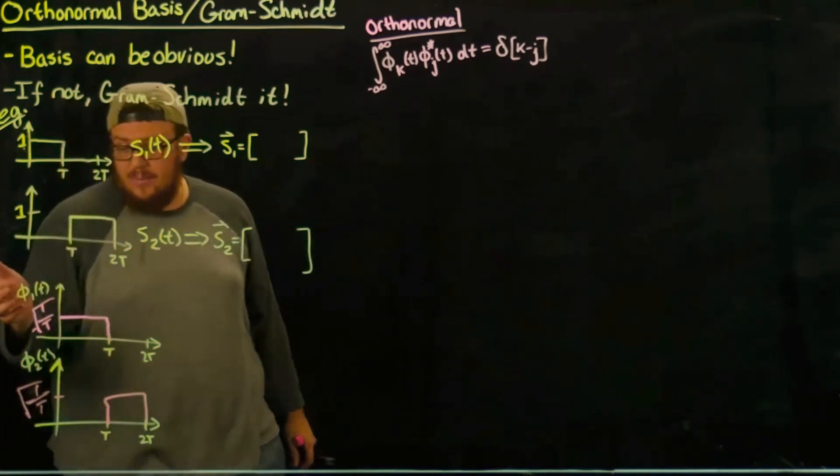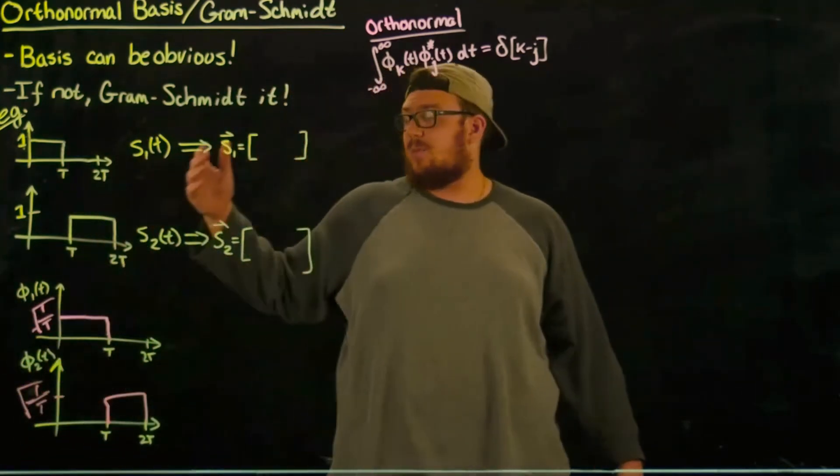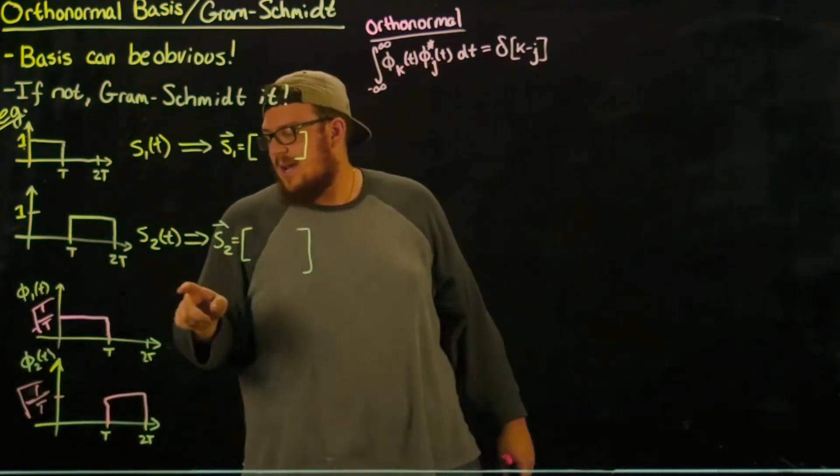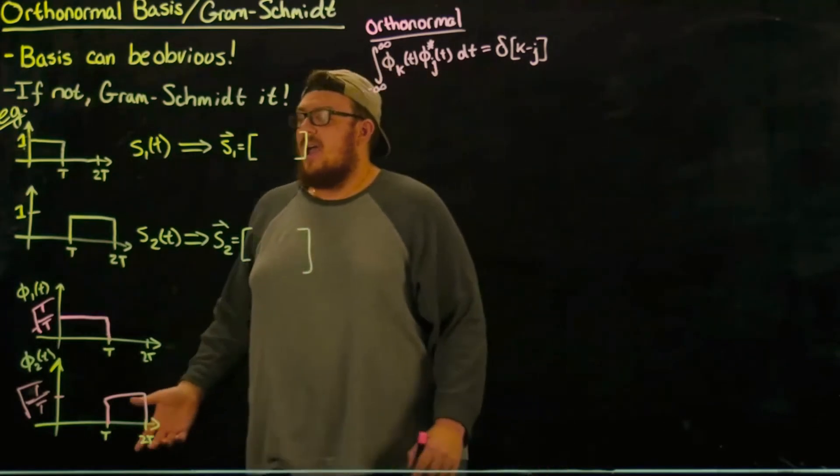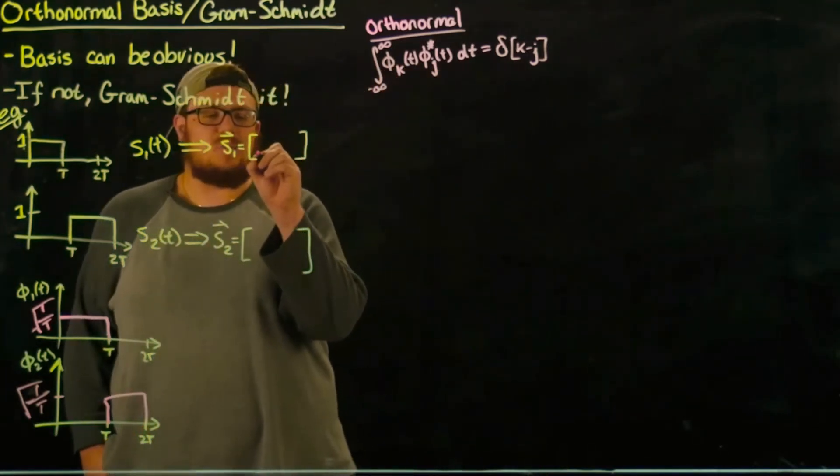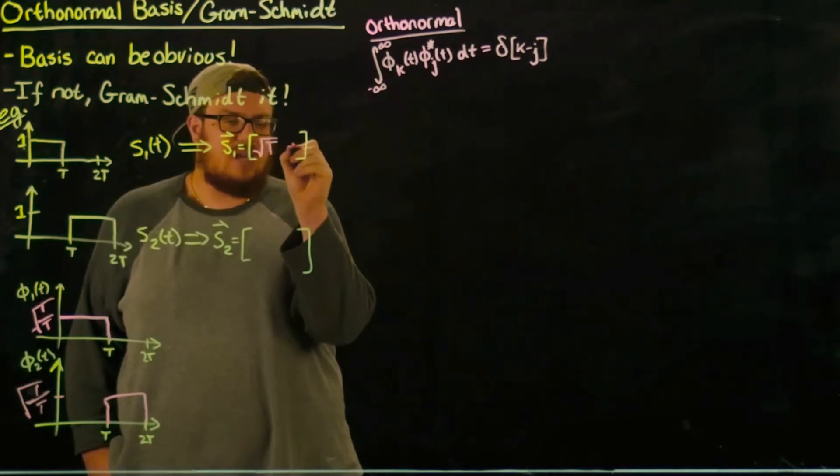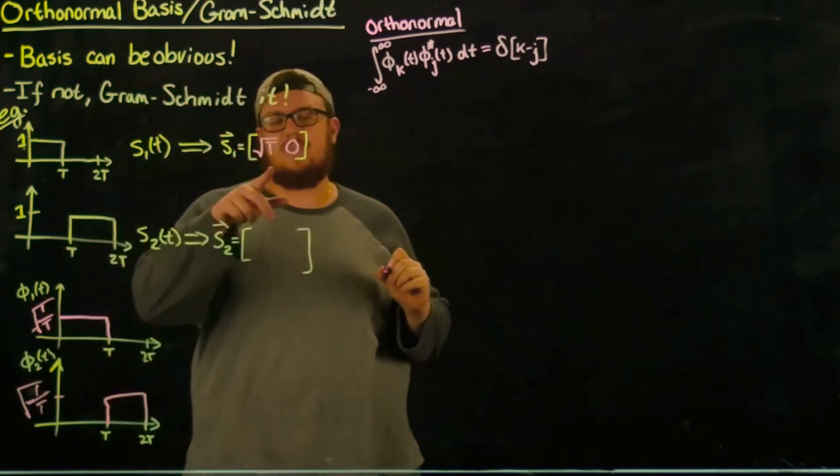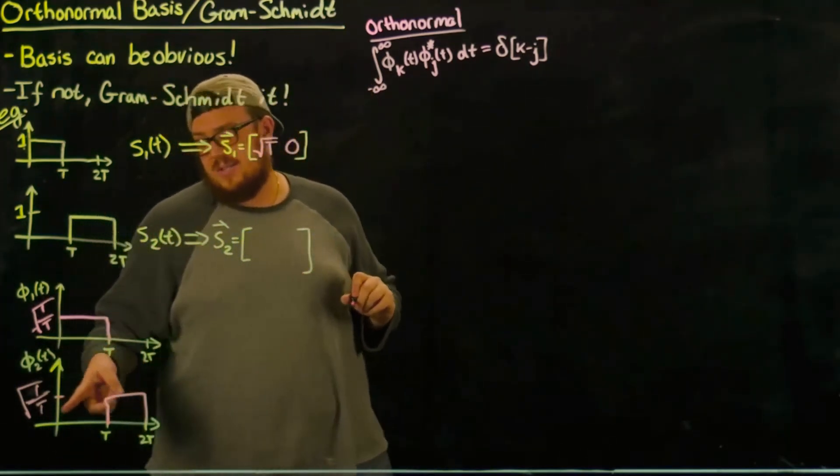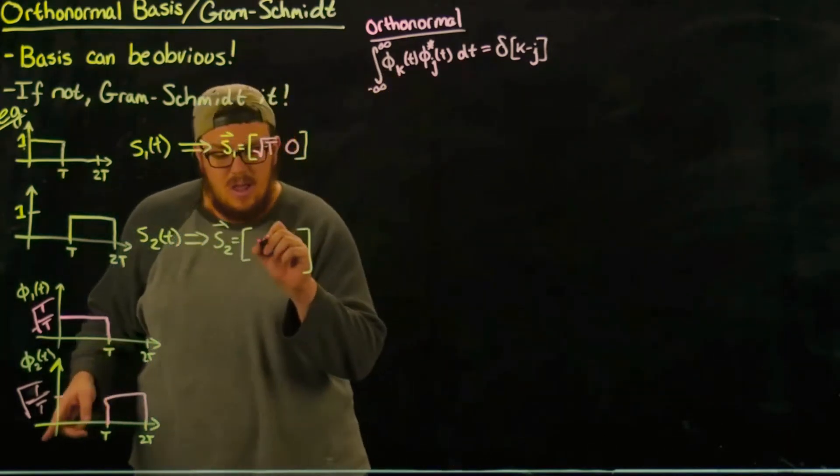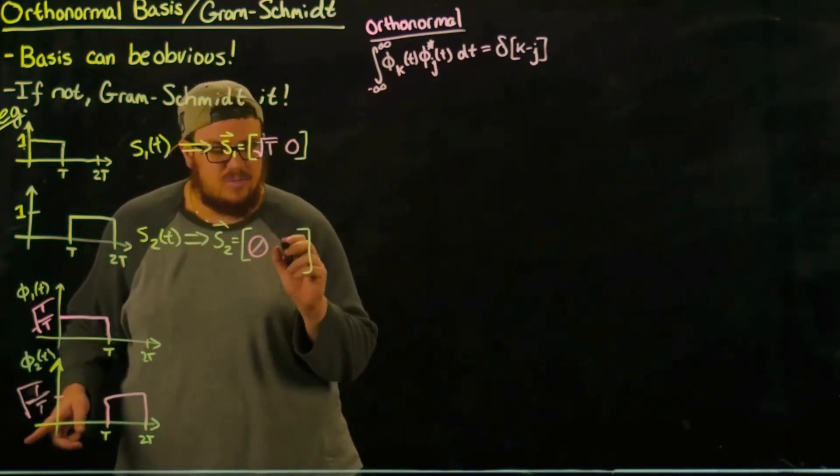And then we have our basis set. We can express these signals in terms of these basis functions and nicely enough we can express these as vectors now. So it's √T and no contribution from the second basis set for the first signal, and the second signal has no contribution from the first basis and √T times this.